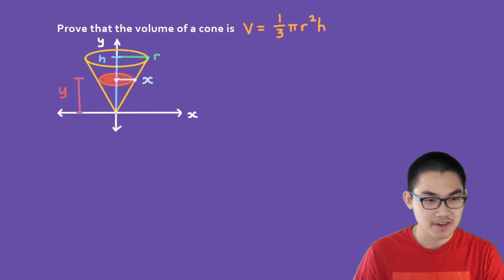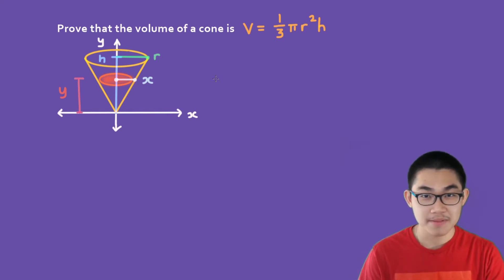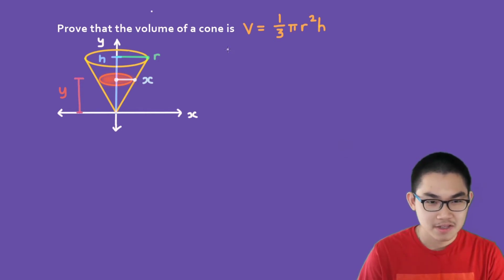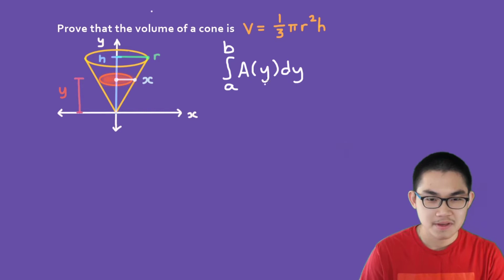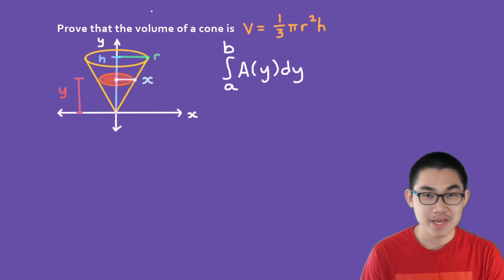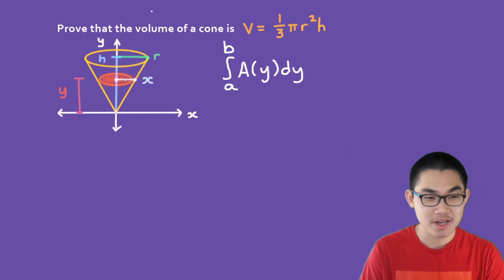The radius of the cross section we call x, and the height of the cross section is y. In order to find the volume of any shape, you need to know this formula: the integral from a to b of A(y) dy. A(y) is the area of the cross section, which is a circle. We integrate with respect to y because the cross section lies on the y-axis — that's the key trick.